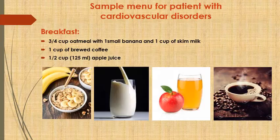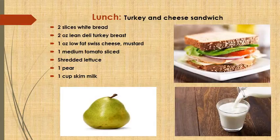Sample menu for patients with cardiovascular disorders. Breakfast: three to four cups of oatmeal with one small banana and one cup of skim milk, one cup of bread with coffee, and half a cup of apple juice. Lunch: turkey and cheese sandwich — two slices of white bread, two ounces of lean deli turkey breast, one ounce of low-fat Swiss cheese, mustard, one low-sodium tomato slice, salad, one beer, and one cup of skim milk.